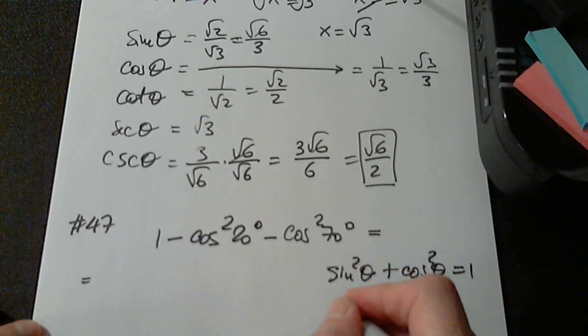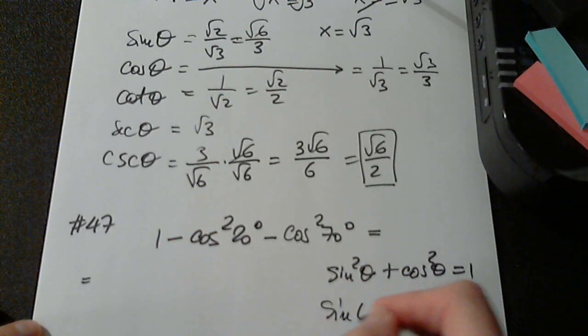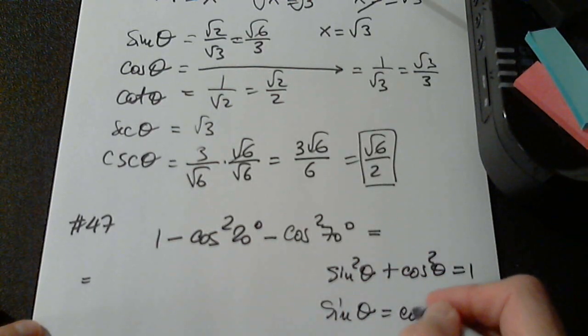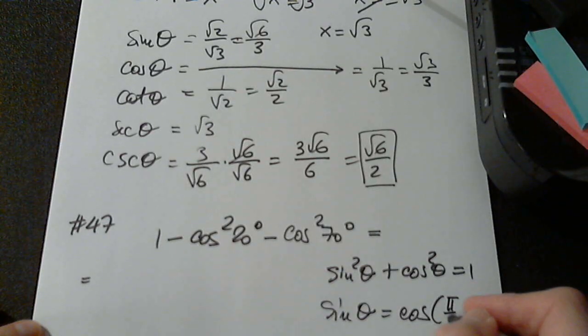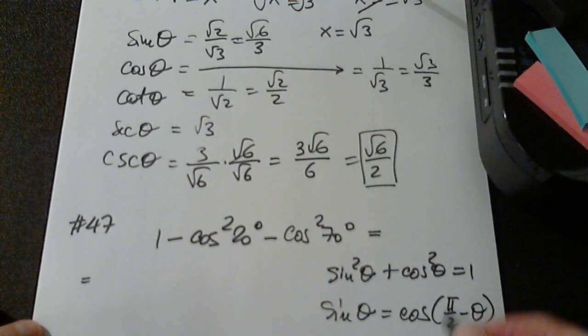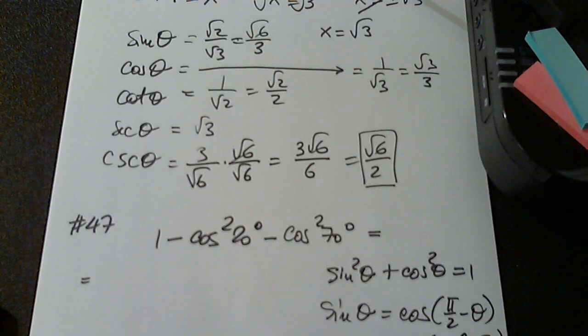And I should have also the sine theta equals cosine pi over 2 minus theta, or 90 degrees minus theta. And vice versa.